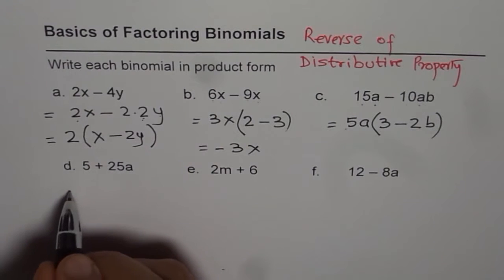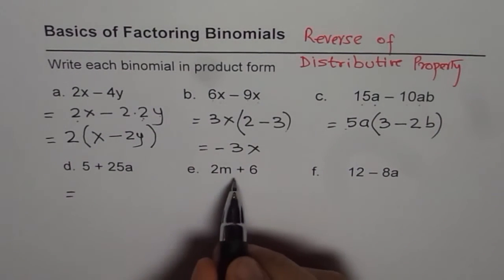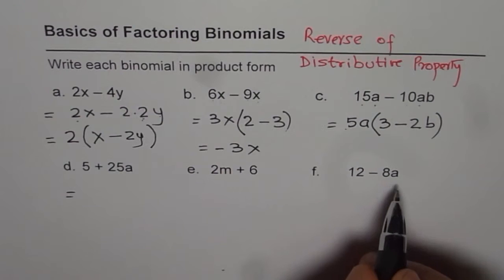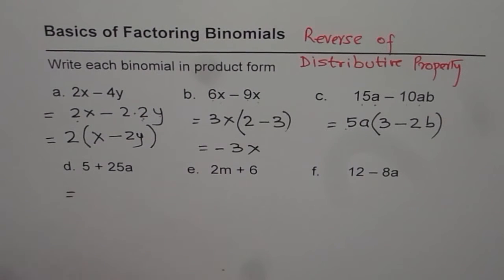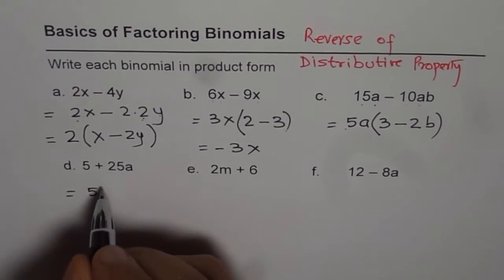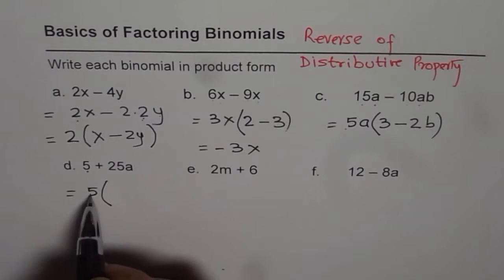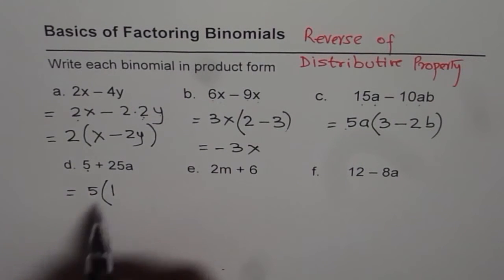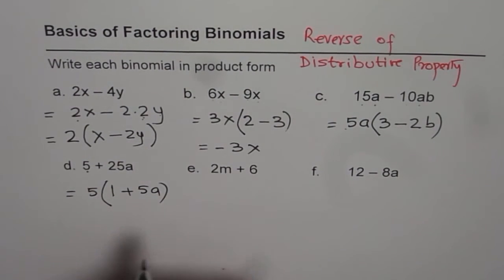Let's do some more. We have 5 plus 25a, 2m plus 6, and 12 minus 8a. You can pause the video, do these questions, and then check with my answers. For 5 plus 25a, 5 is a common factor. If I take 5 as a common factor, 5 divided by 5 is 1, so we get 5 times (1 plus 5a).